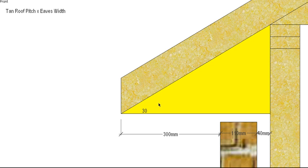So in this case our roof pitch is 30 degrees, the angle here, and our eaves width is 300mm from the brickwork to the outside of the rafter. However,